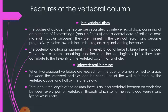The intervertebral foramina are formed by a gap between the pedicles of adjacent vertebrae when viewed from the side — half the wall formed by the vertebra above and half by the one below. Throughout the length of the column there is an intervertebral foramen on each side between every pair of vertebrae, through which the spinal nerves, blood vessels, and lymph vessels pass.